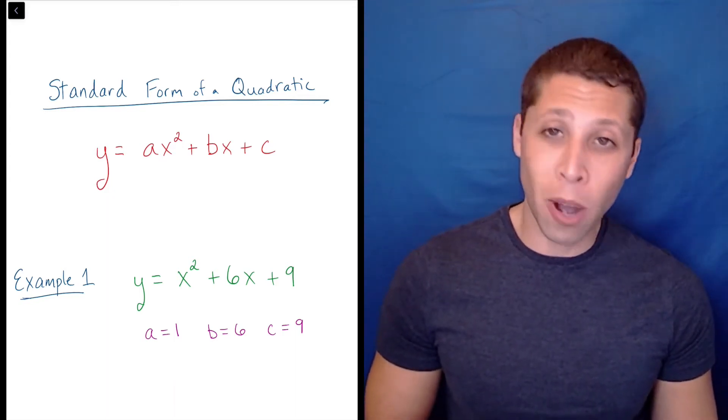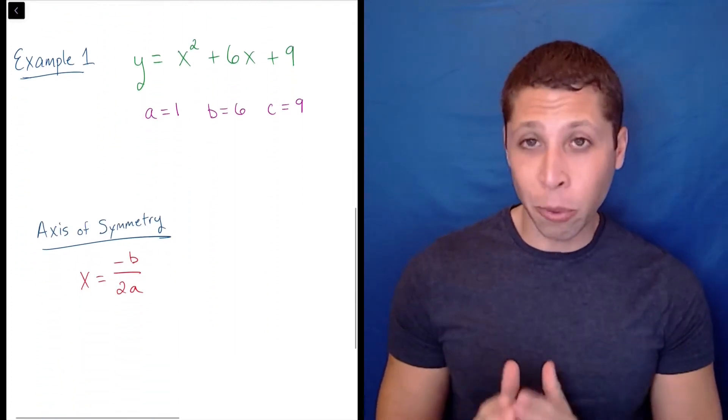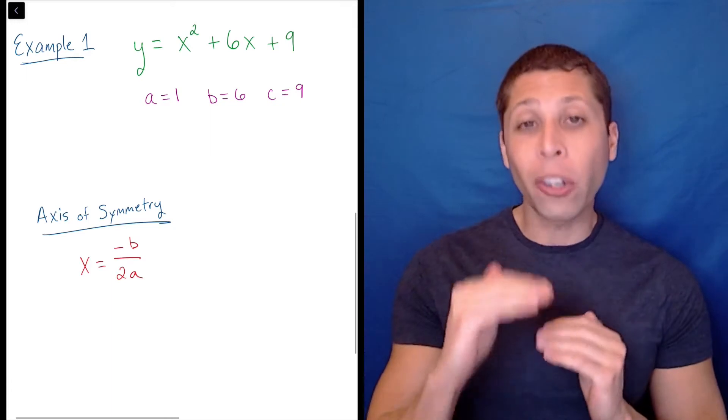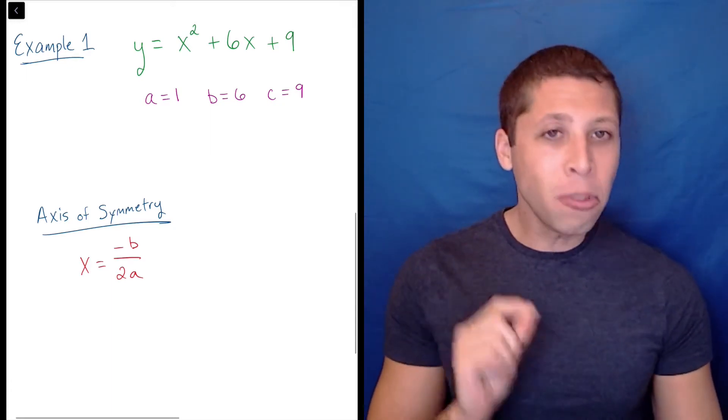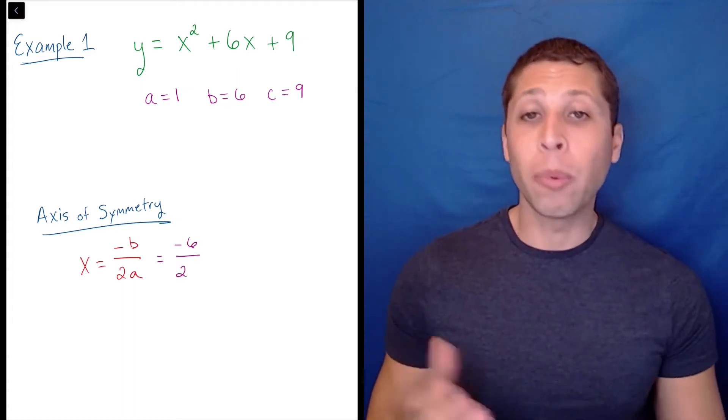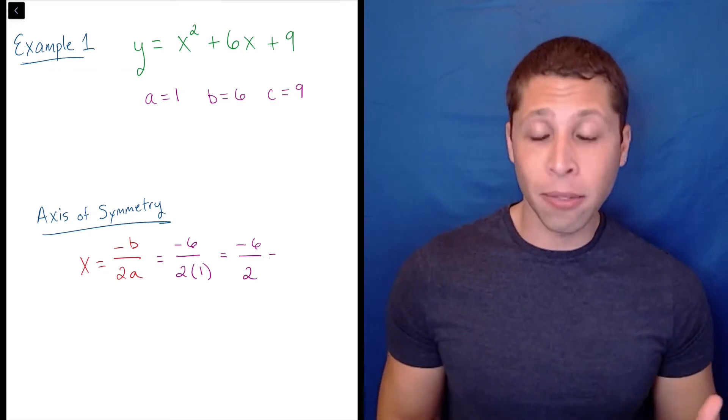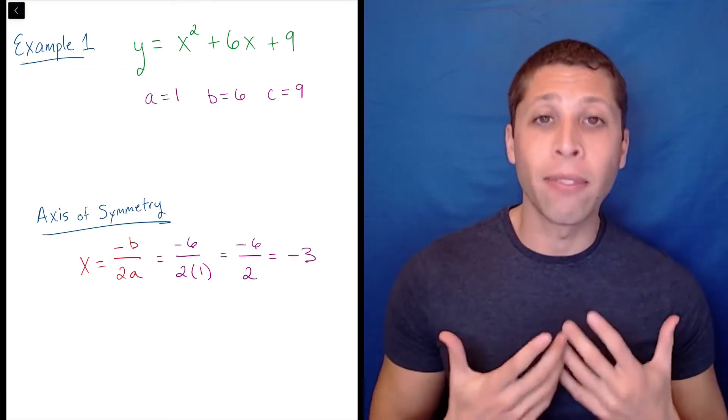The axis of symmetry formula is x equals negative b over 2a. Substitute the values of a and b into the formula. In our case, we would get negative 6 over 2 times 1. Simplify to find that the axis of symmetry is x equals negative 3.